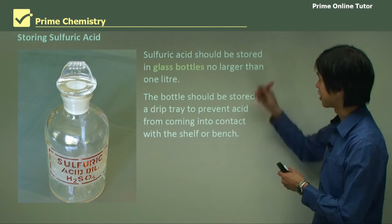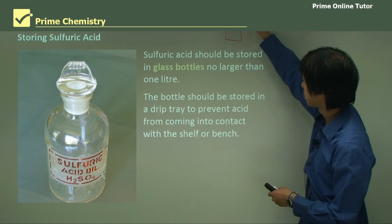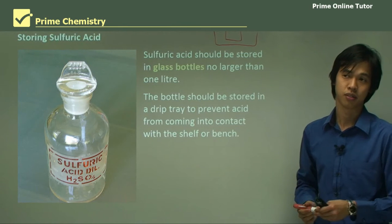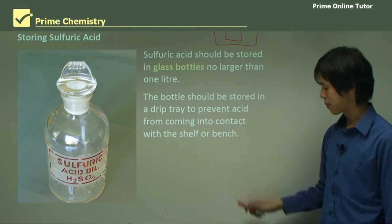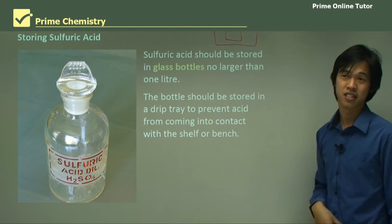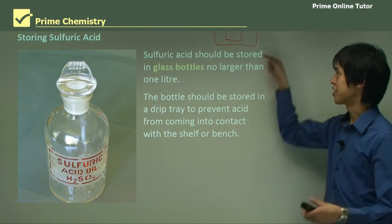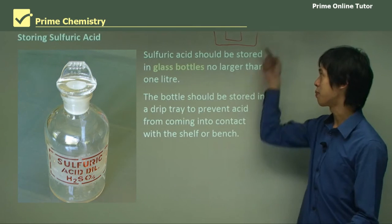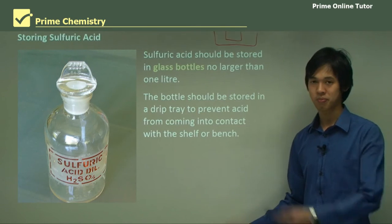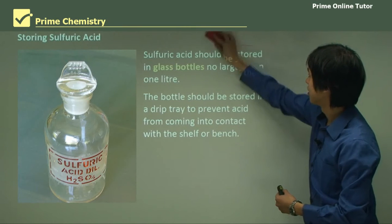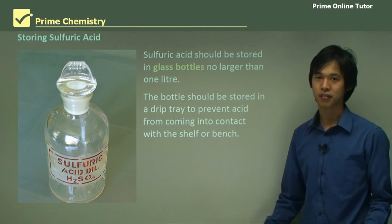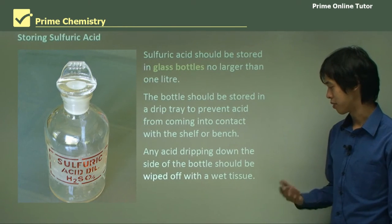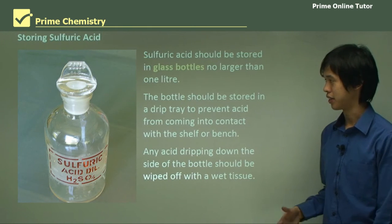A drip tray is essentially a secondary tray placed underneath the bottle to catch the acid if it happens to spill or someone knocks it over. It should be big enough to contain all of that liquid safely — so if the bottle holds one litre, the tray should hold at least that volume, preferably bigger if space allows. Any acid dripping down the side of the bottle should also be wiped off with a wet tissue straight away.